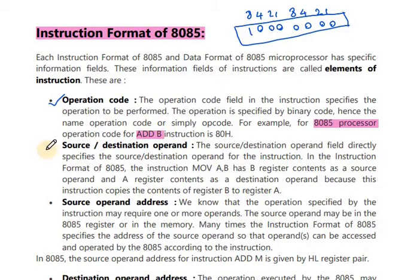The next element of instruction is source or destination operand. Look at this instruction: MOV A,B. We know that these are registers. A for accumulator and B is another register. We have already discussed the architecture of 8085 where we can see these registers, which reside inside the CPU.